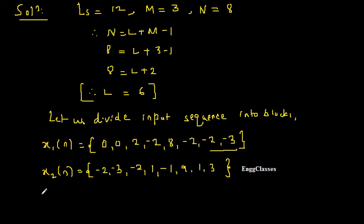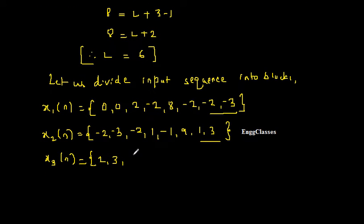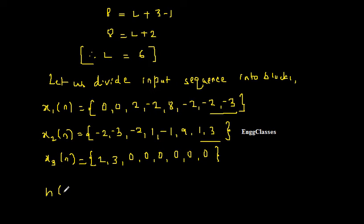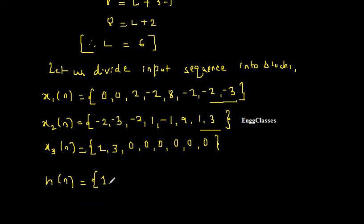Next I have to consider x3[n] as well. 2 samples from the previous block, that is 1 and 3, and 6 samples from the input x[n]. But here x[n] stops, so I will put 6 zeros. That gives 2 samples plus 6 zeros, making a length of 8. Now for h[n]: I am performing circular convolution, so h[n] must also be of length 8. It is given as length 3, that is 1, 2, 3, so I have to pad 5 zeros to make it length 8.